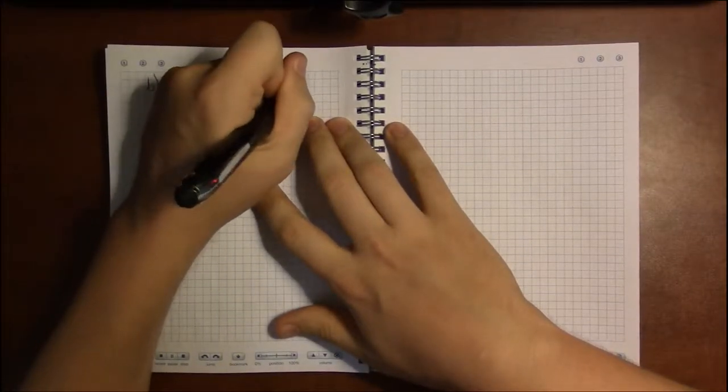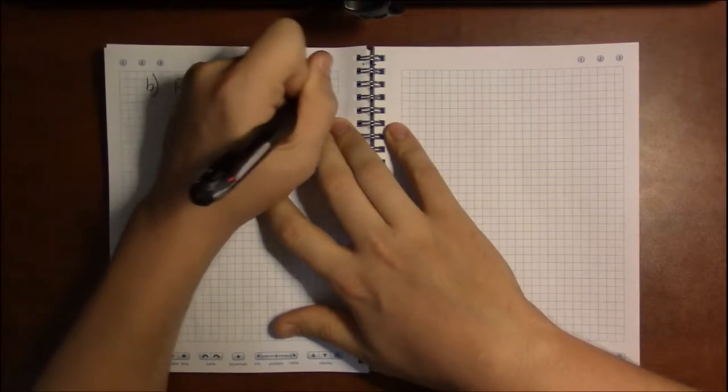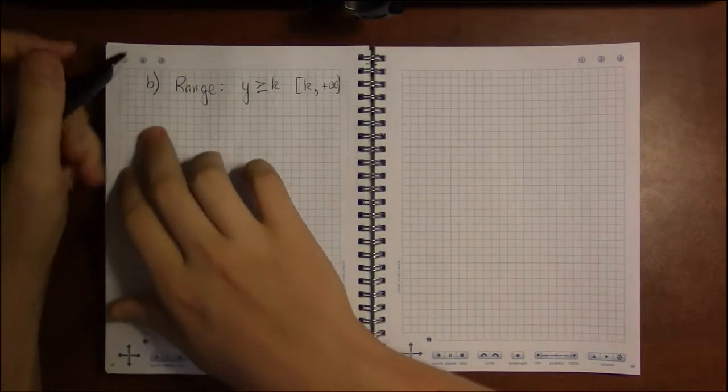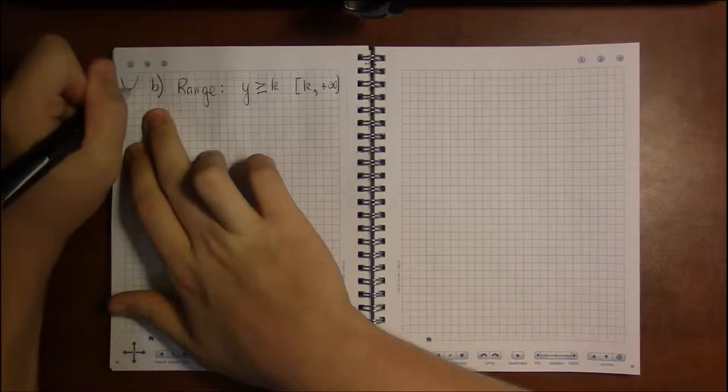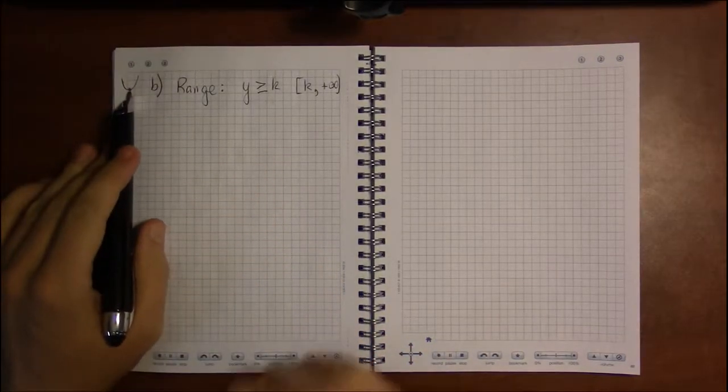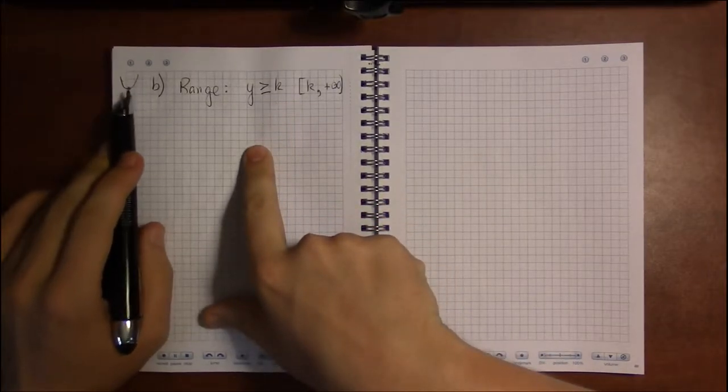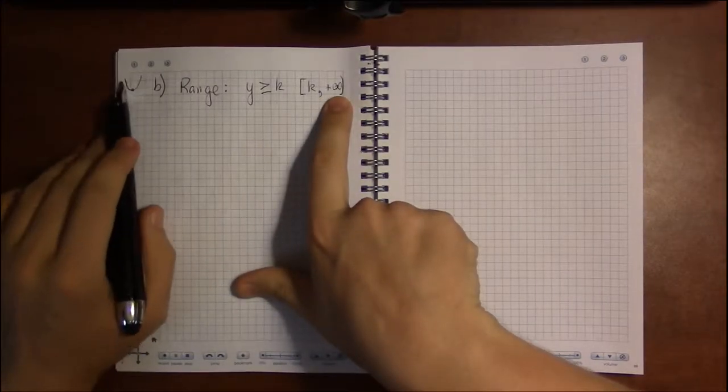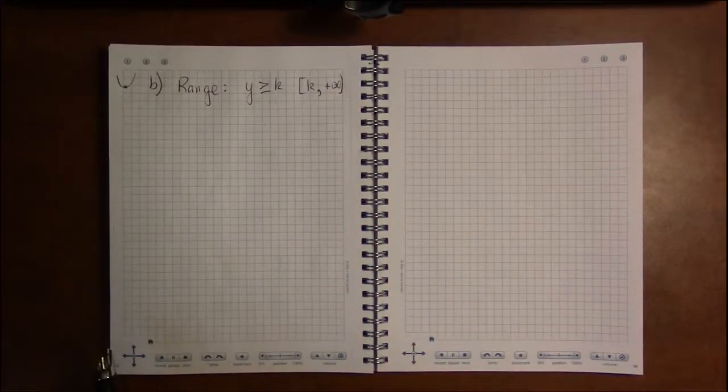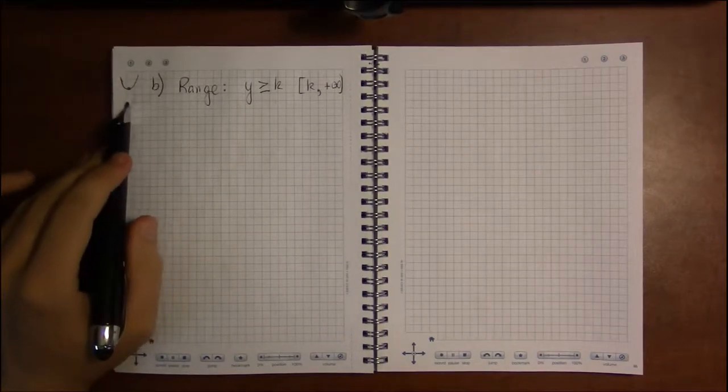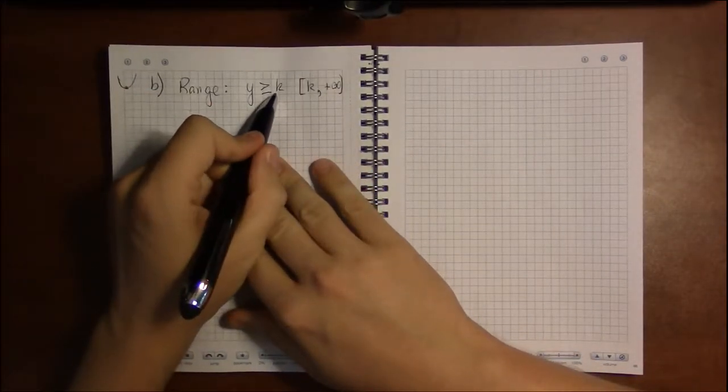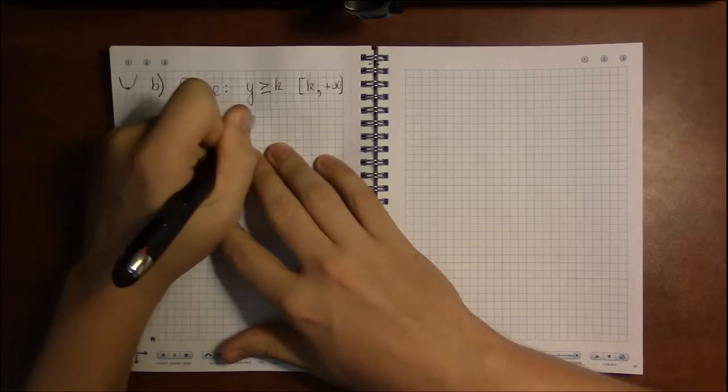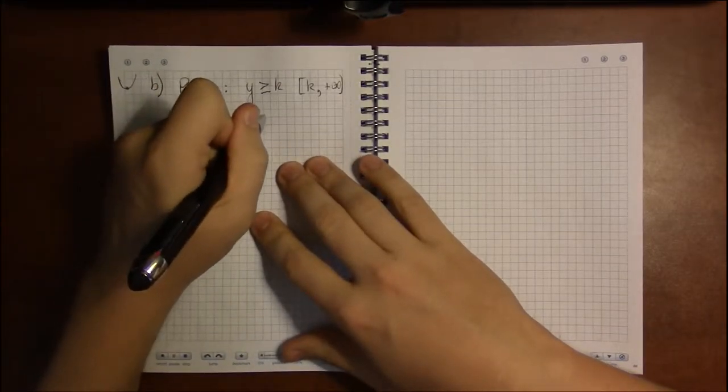Or if you put this in interval notation, the lowest is k and you can get as large of a y value as you like. Looking at a parabola that opens upwards, our smallest y value will be at the vertex, and we can get y values of any size, anything larger, but we'll never get any y values lower than the min. So we need k, and to get k we need h, and h if we know the standard form is minus b over 2a.